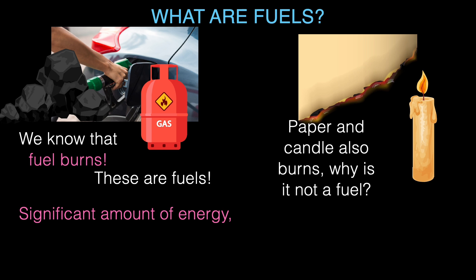Fuels give off a lot of energy when they burn — even a small amount of fuel can produce a big amount of heat, which is super useful. But with something like paper, you burn the same amount and get barely any heat — not really efficient. So fuels are basically substances that give off a good amount of energy when they burn, and that burning is part of a chemical process called combustion.